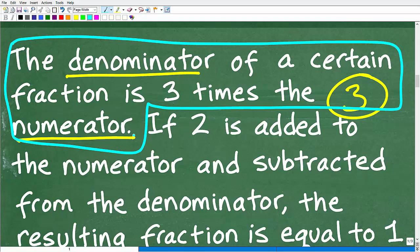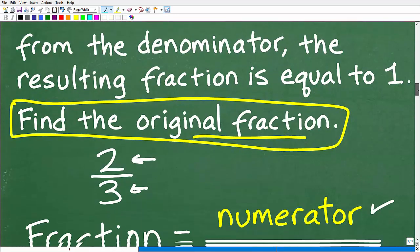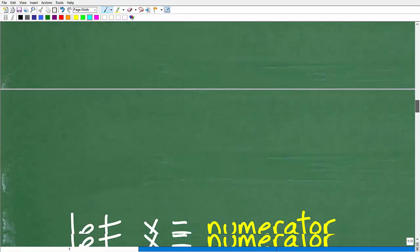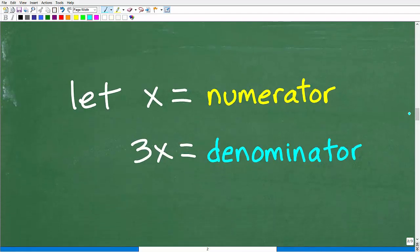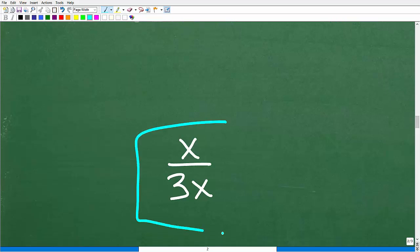Let's use the variable x. The denominator is three times the numerator. If we let x equal the numerator, the denominator could be 3x, which is three times x. When solving an algebra word problem, you need to define what your variables stand for. So we're going to let x equal the numerator, so 3x will be our denominator. This expression x over 3x is our original fraction, where the denominator is three times the numerator.